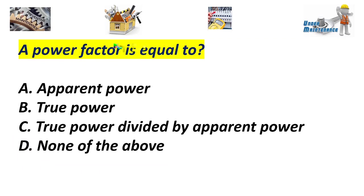A power factor is equal to: A. Apparent power. B. True power. C. True power divided by apparent power. D. None of the above. Answer: C. True power divided by apparent power.